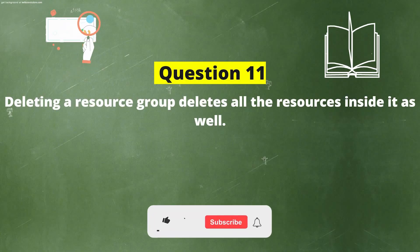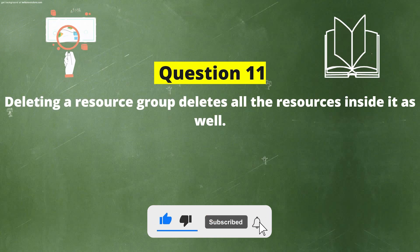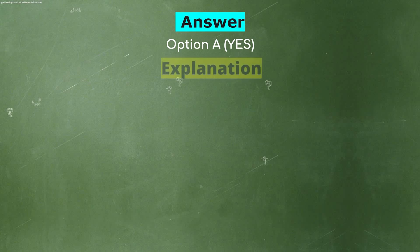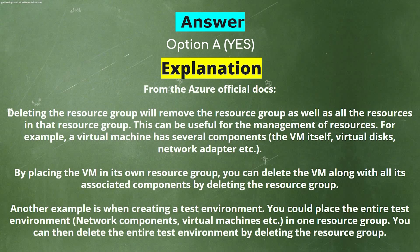Next question. Deleting a resource group deletes all the resources inside it as well. Option A: Yes. Option B: No. The correct answer is Option A — Yes. From the official Azure docs, deleting the resource group will remove the resource group as well as all the resources in that resource group. For example, a virtual machine has several components — the VM itself, virtual disk, network adapter, etc. By placing the VM in its own resource group, you can delete the VM along with all its associated components by deleting the resource group. Similarly, an entire test environment can be deleted at once by deleting its resource group.